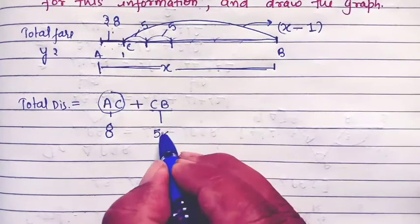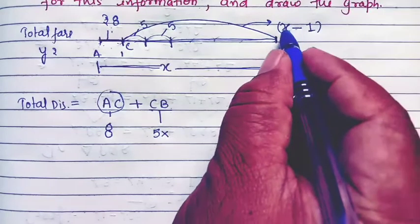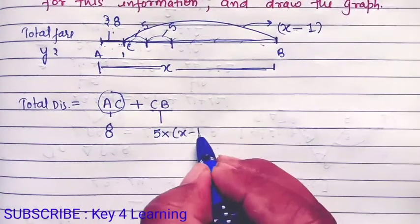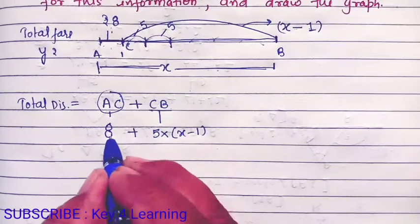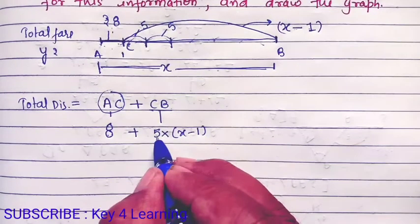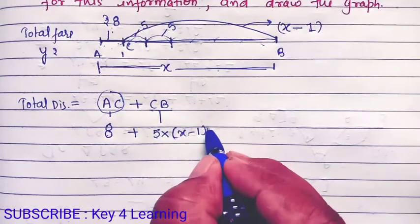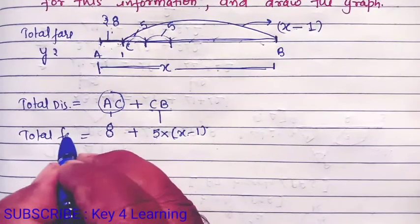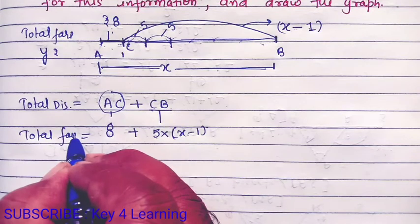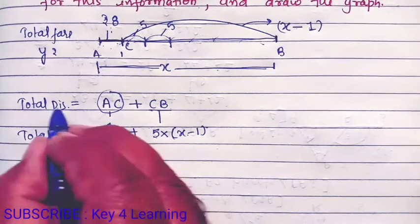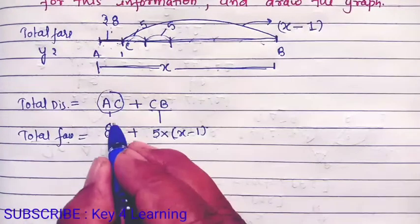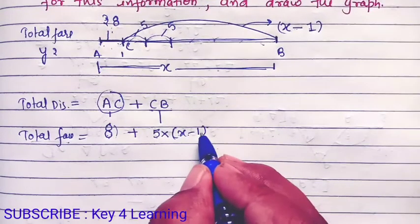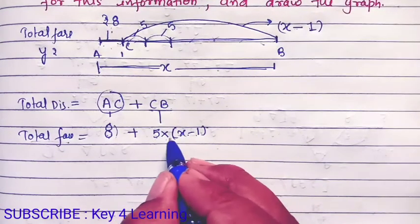So the total fare: for the first 1 kilometer it is 8 rupees, and for the remaining x minus 1 kilometers it is 5 rupees per kilometer. So total fare y equals 8 plus 5 times (x minus 1).